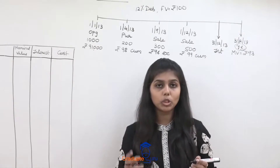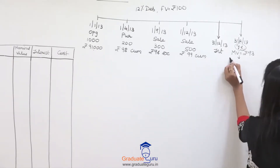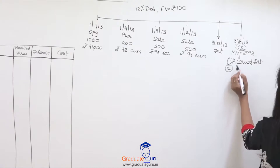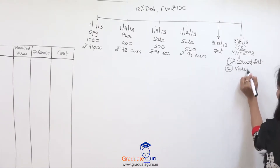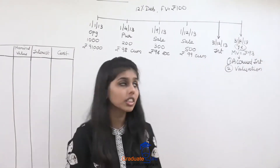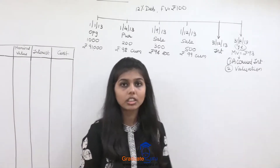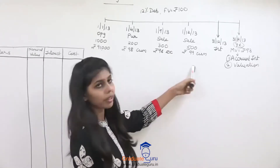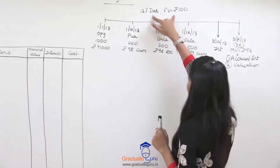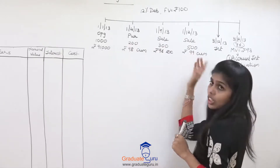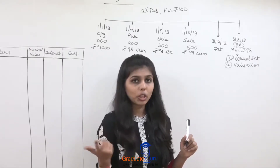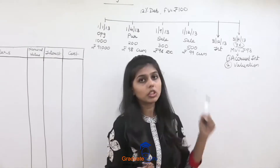Now whenever the year end comes, remember you always have to do two things: one is accrued interest, and second is valuation — because market value is given, we assume these debentures are current assets, and therefore valuation is required under AS 13. So the timeline is ready with all transactions.